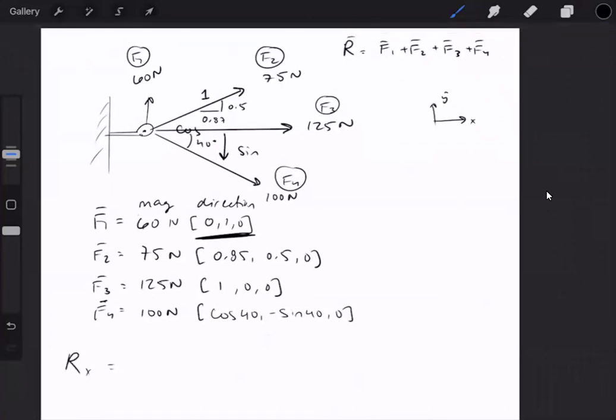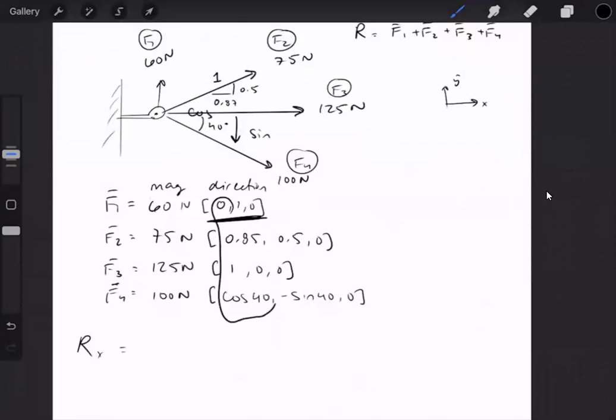Adding all these vectors together, we'll start with the x component, which we've written down to be this first column. So we can add all of this together, including the magnitudes. That gives us the x component. 0 for F1, 75 times 0.85 plus 125 times 1. I'm not always going to put that 1 in there, but sometimes I might. 100 newtons times cosine of 40.